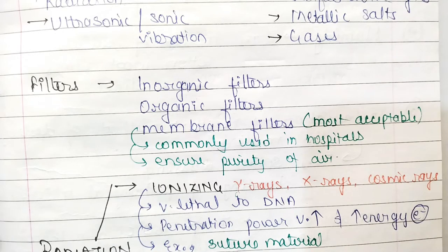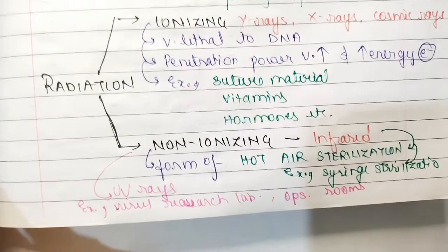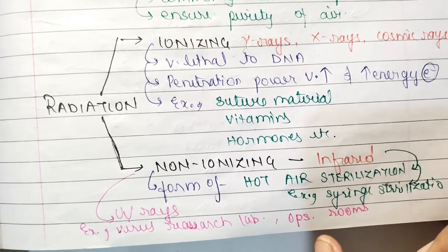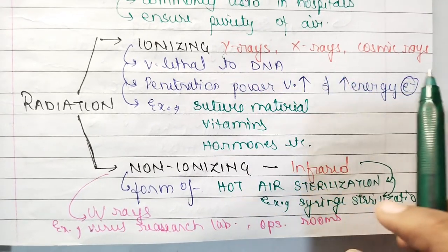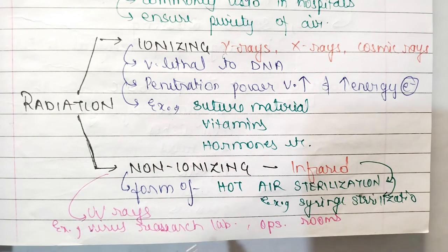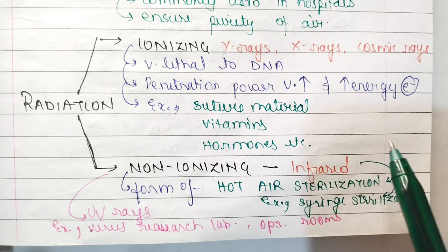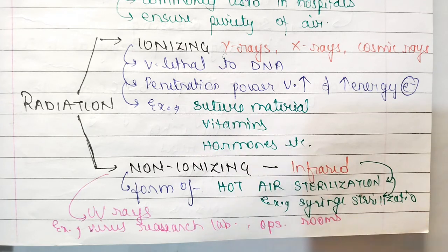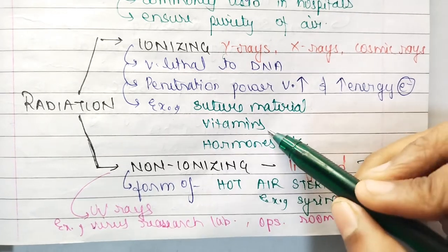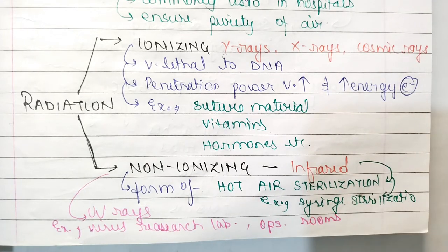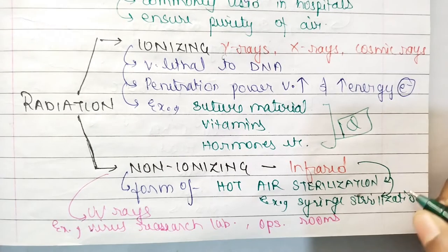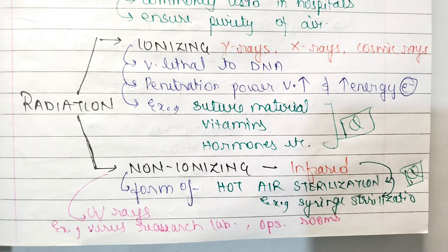Radiation is of two types: ionizing radiations and non-ionizing radiations. In ionizing radiations you have X-rays, gamma rays, and cosmic rays. These are very lethal to DNA, with very high penetration power and high energy of electrons. Examples used in radiation sterilization include suture materials, vitamins, and hormones. Non-ionizing infrared radiation is a form of hot air sterilization used in syringe sterilization. UV rays are used in virus research labs and operation rooms.